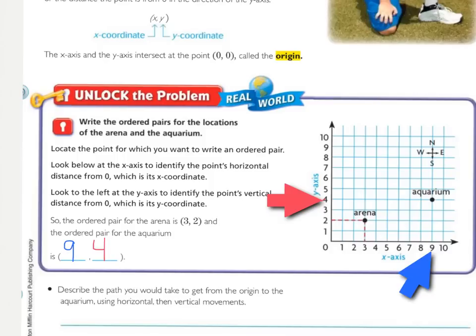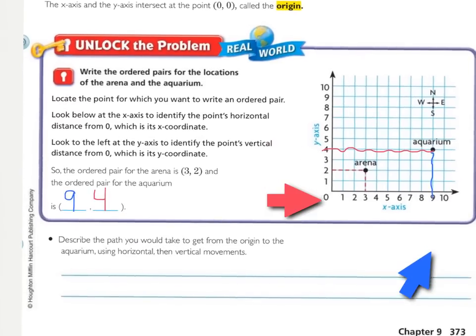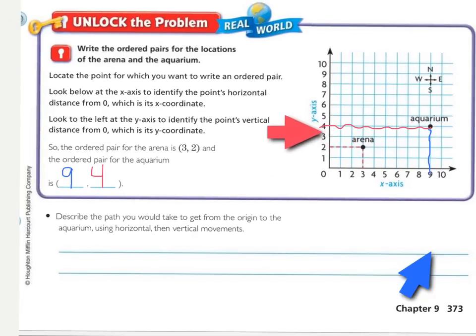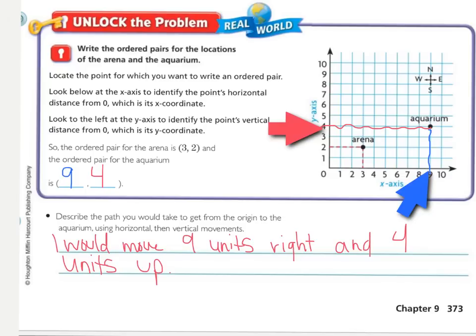My y-axis is going to be 4. And, if I just kind of do those lines right here, I can see that whenever they cross, there's the aquarium. So, my ordered pair is 9, 4. Below it says, describe the path you would take to get from the origin, that's 0, 0, to the aquarium using horizontal and vertical movements. Press pause, and if you had to give me directions using horizontal and vertical movements, write me just a quick sentence about how I would get to the aquarium. My sentence is that I would move 9 units right and 4 units up.